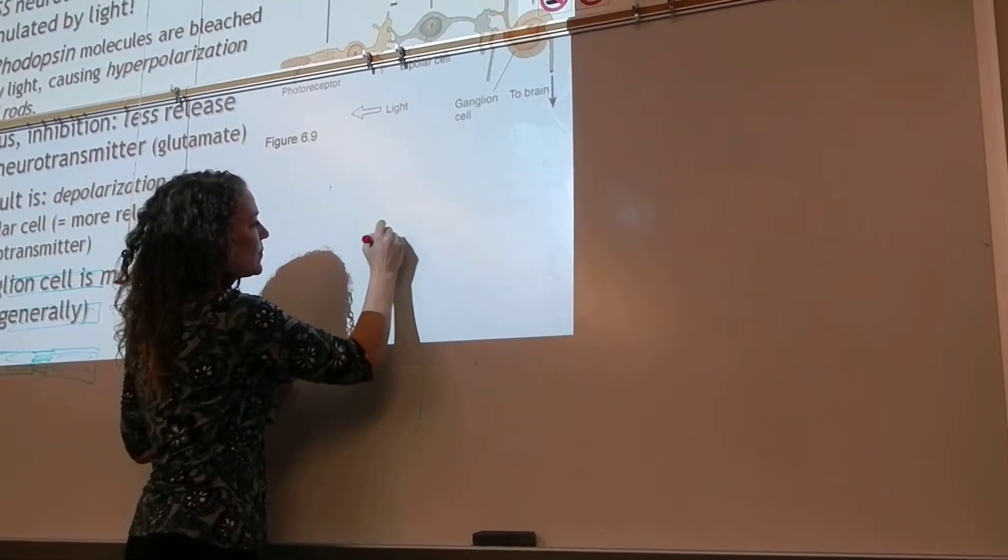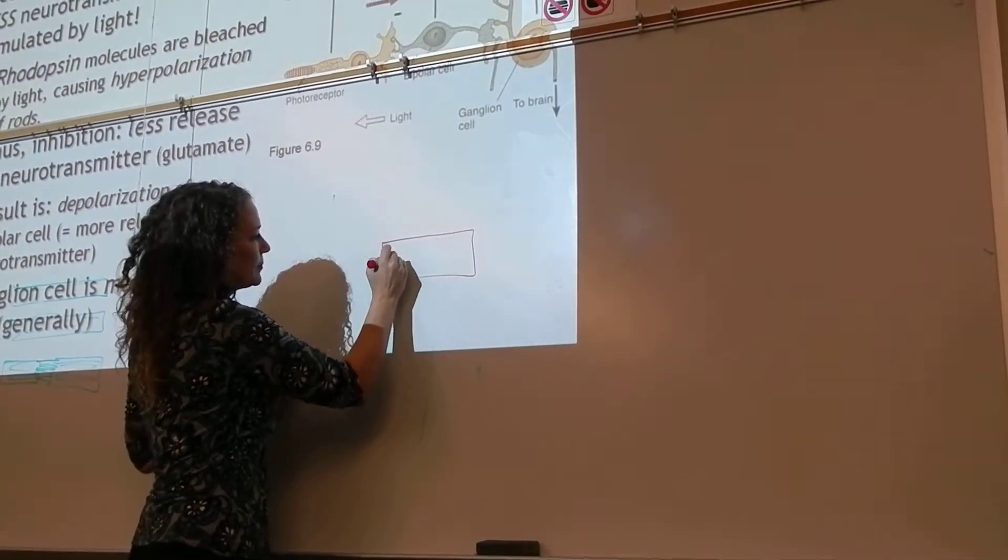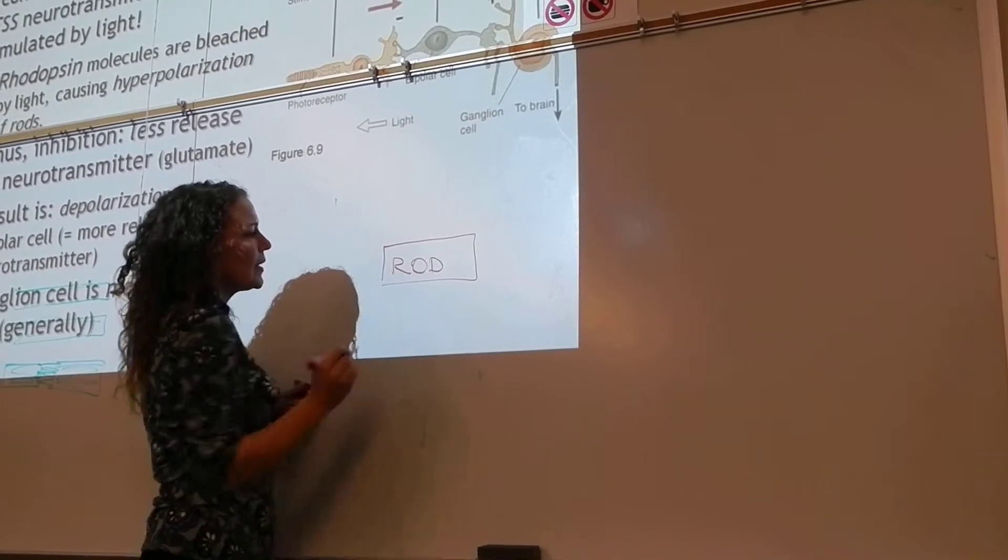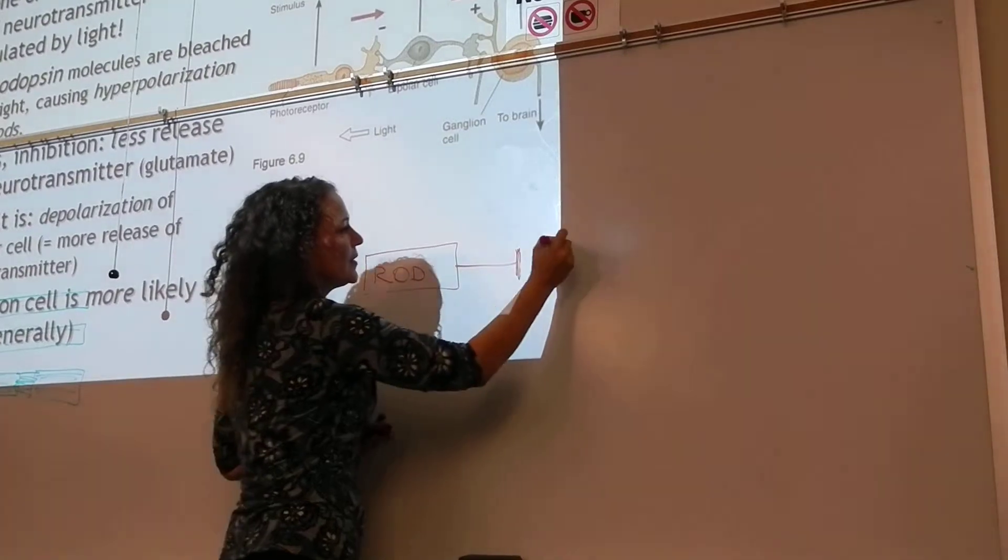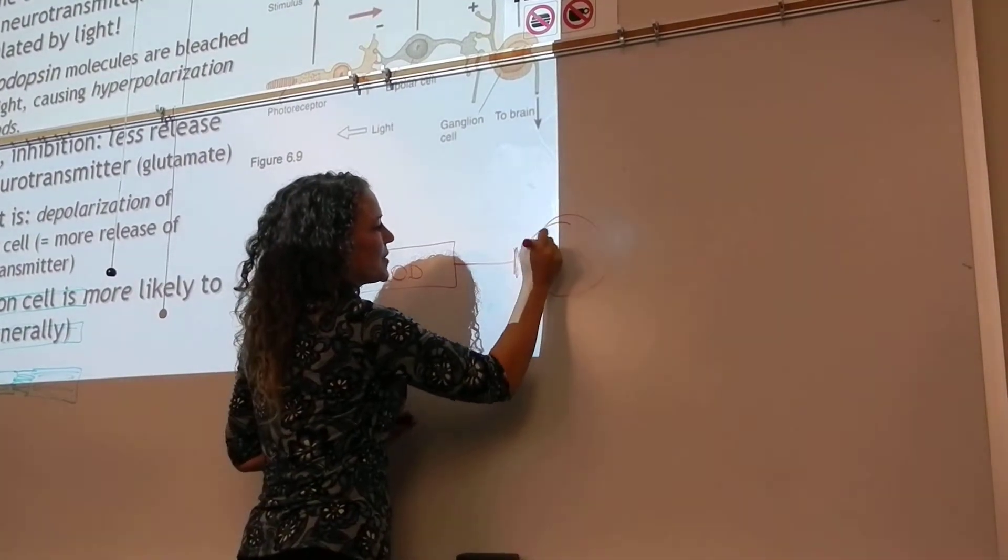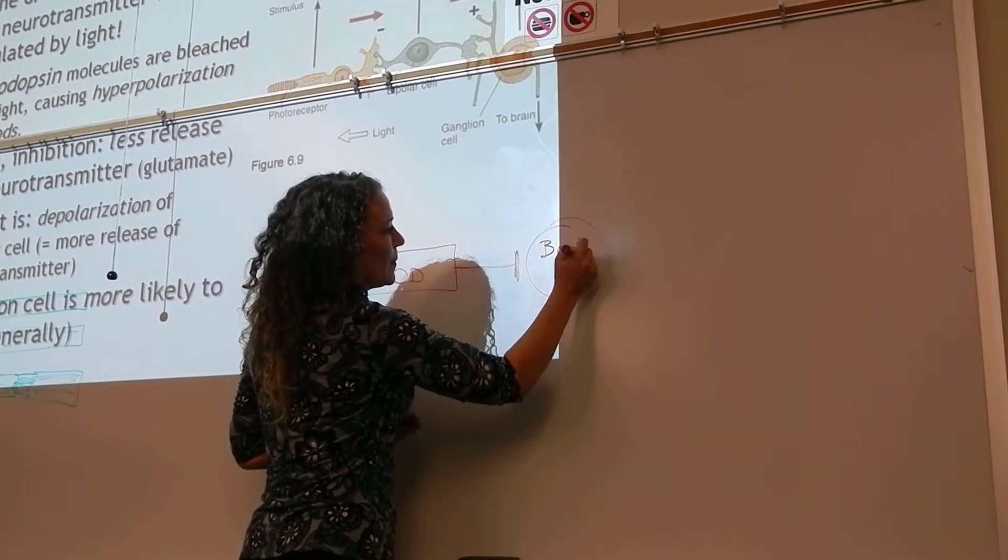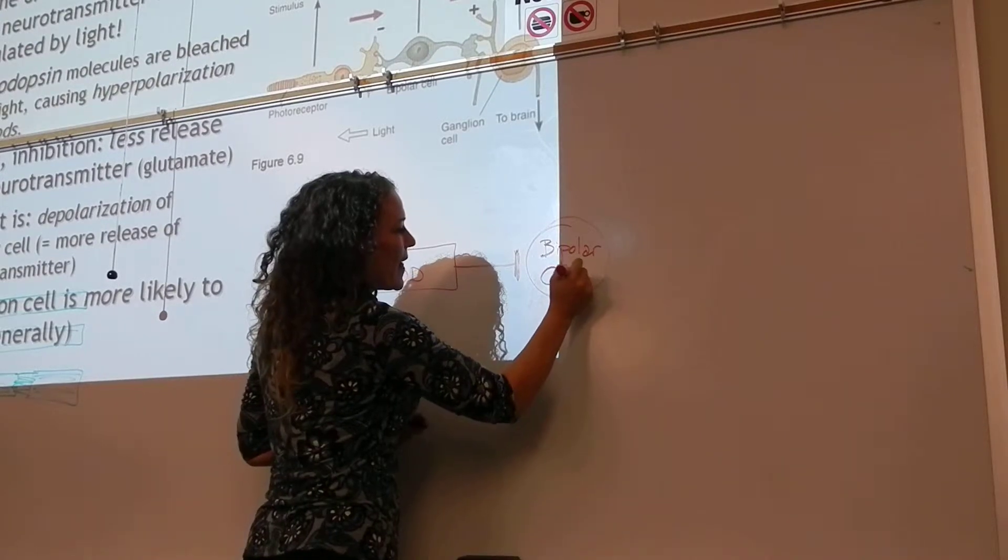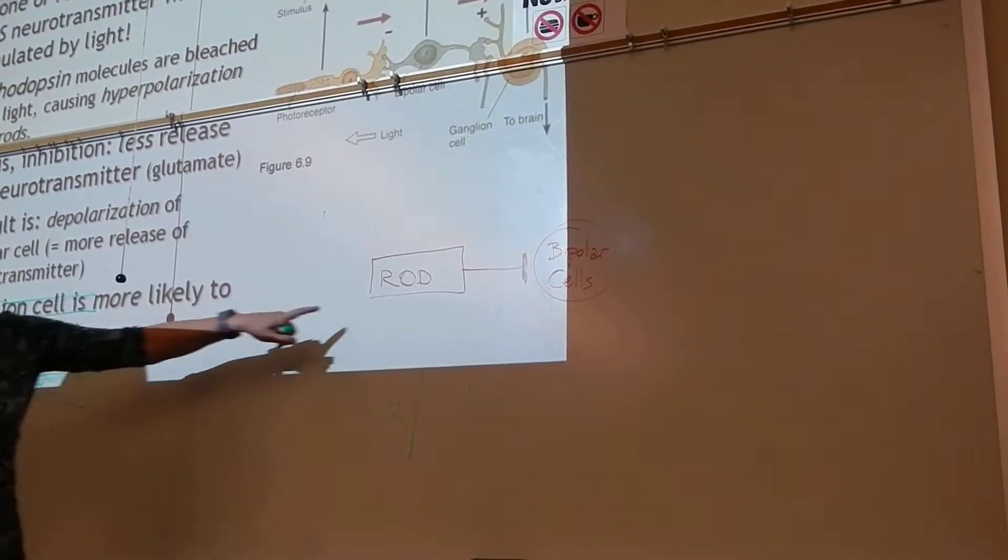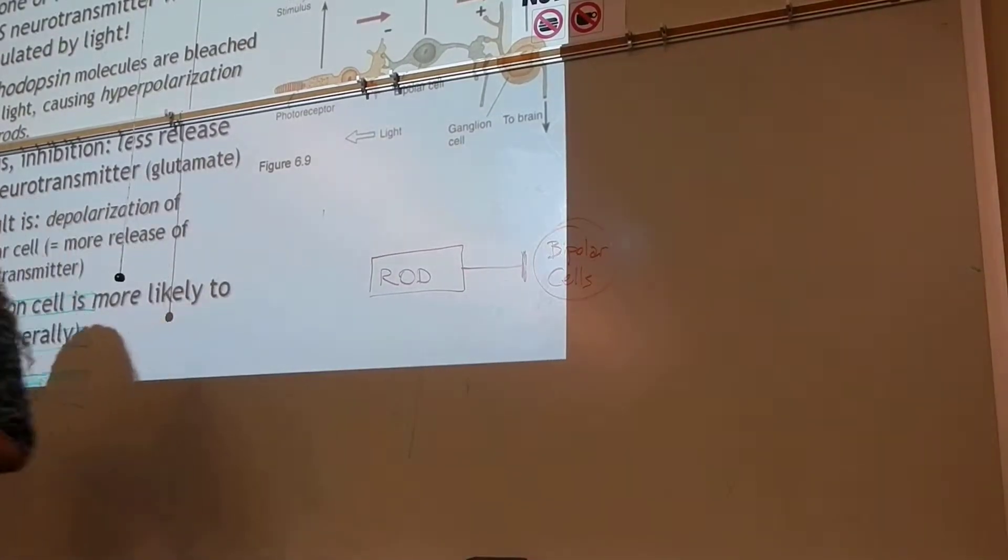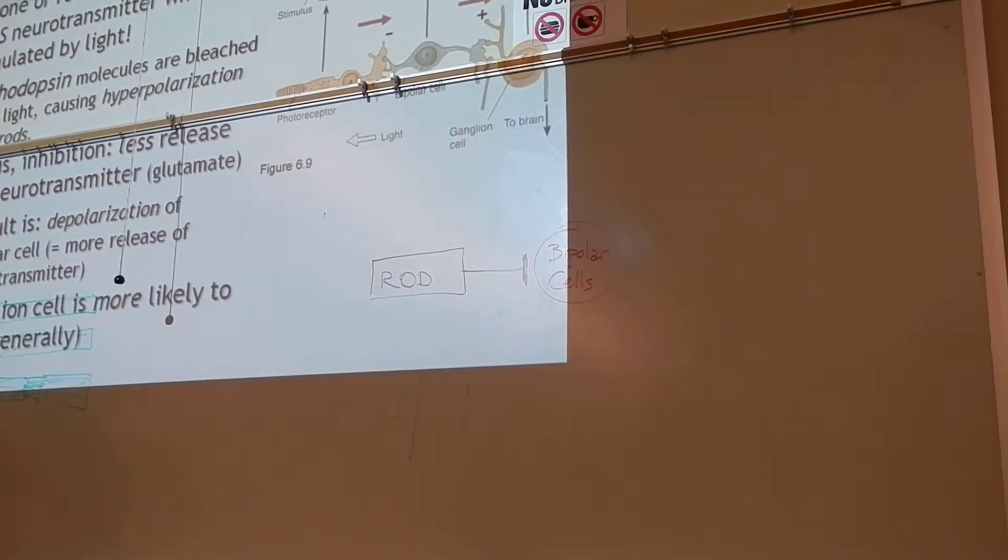Let's do this first. So this is a rod. It talks negatively to the bipolar cell. What I mean by that is that it inhibits the bipolar cell. The effect of the rod firing on the bipolar cell is it makes that bipolar cell less likely to fire.